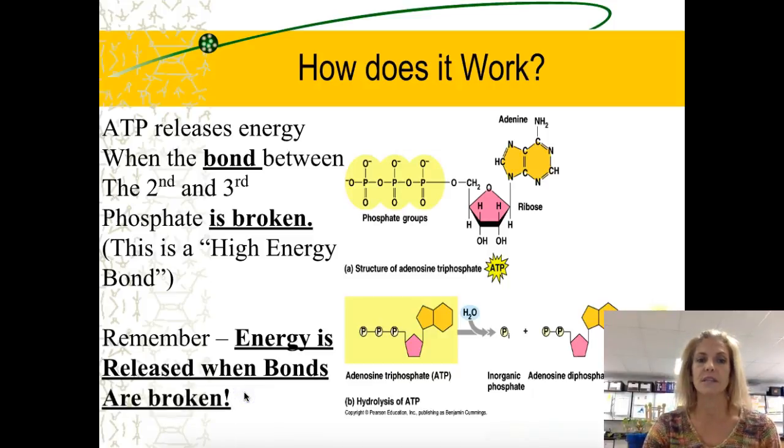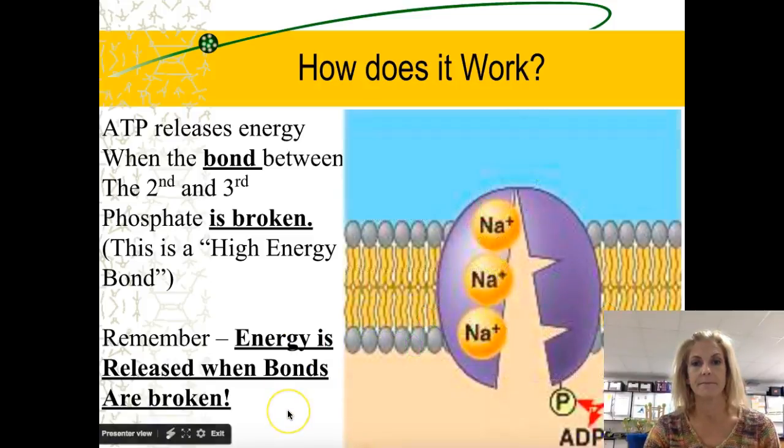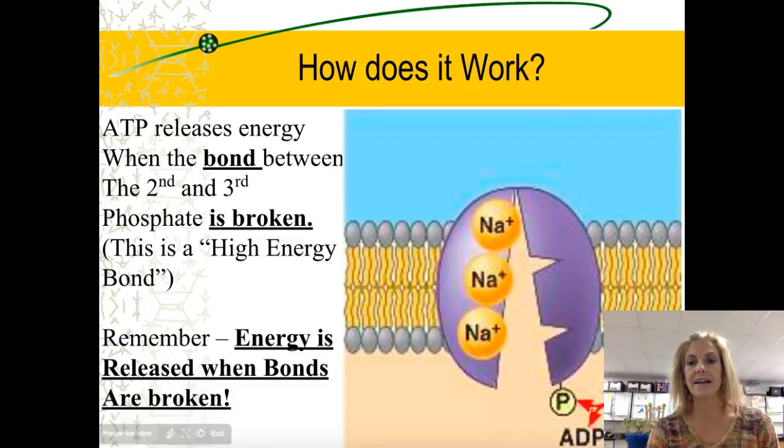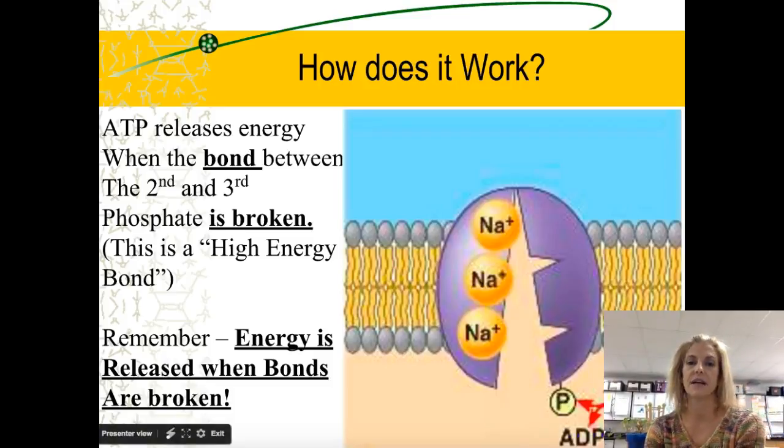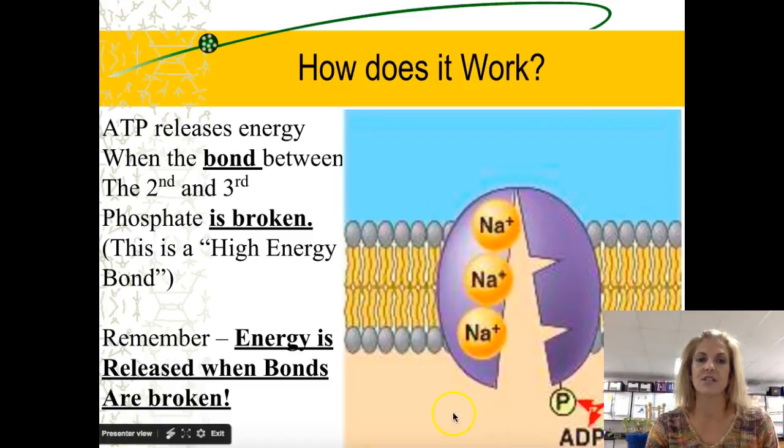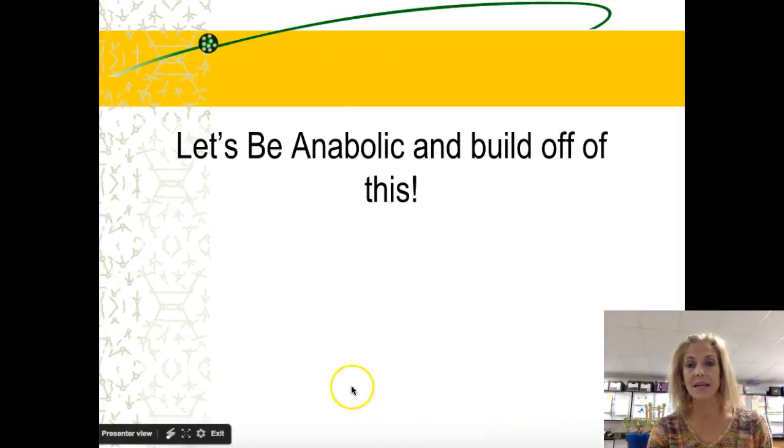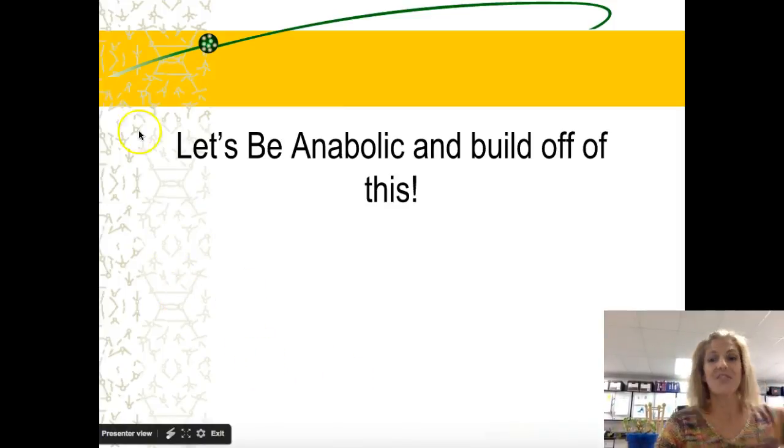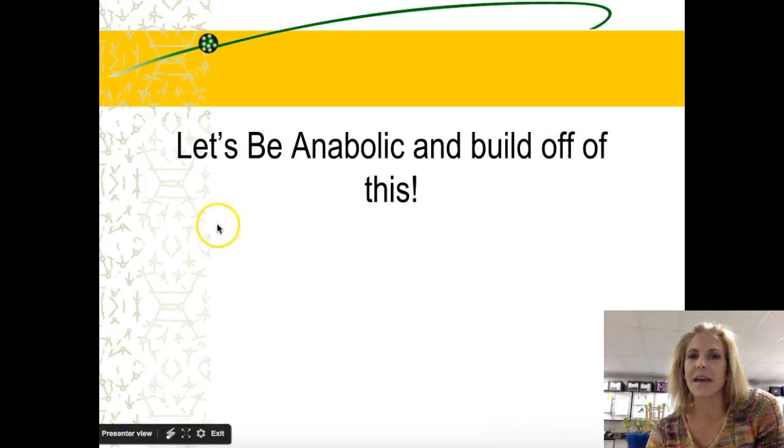We talked about sodium potassium pump - that was an example of when we would use that ATP energy. That phosphate, it's broken and it's transferred to this sodium potassium pump. A lot of times when you transfer a phosphate, that phosphate activates whatever it is that it's attaching to. In this case it's attaching to the sodium potassium pump. It moves three sodium molecules out, and out here it's going to grab hold of two potassiums, place them right there and it's going to pull two potassiums in. So that's one example of how our cells would use the energy that it got from ATP that it got from cellular respiration that came from photosynthesis that came from the sun. And that's the story of thermodynamics. So let's be anabolic and build off of this.